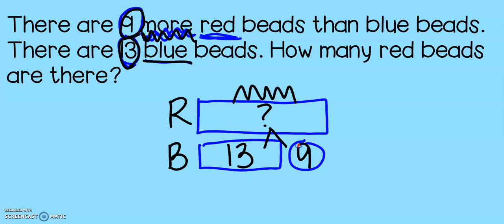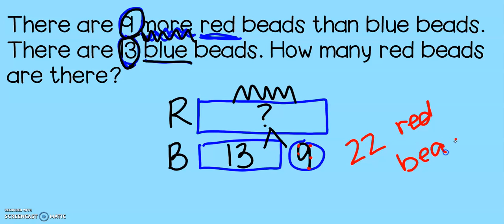So 13, 14, 15, 16, 17, 18, 19, 20, 21, 22. That means there are 22 red beads. There were only 13 blue beads, but it says there are more red beads.